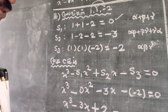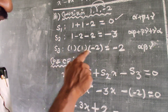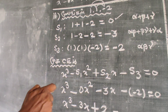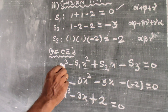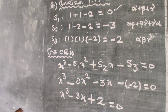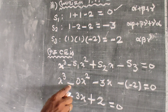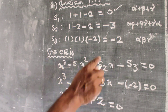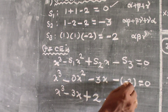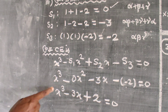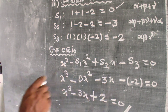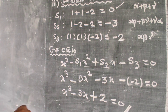S3 is the product of 3 roots: alpha beta gamma equals 1 into 1 into minus 2, which is minus 2. So S1 equals 0, S2 equals minus 3, S3 equals minus 2. Substituting into the cubic formula: x cube minus 0 x square plus minus 3 x minus of minus 2 equals 0. That gives x cube minus 3x plus 2 equal to 0. This is the cubic equation for roots 1, 1, minus 2.